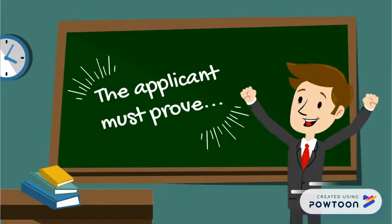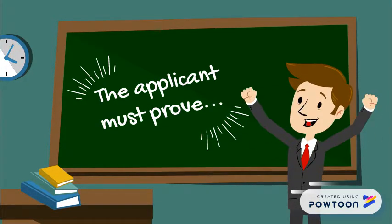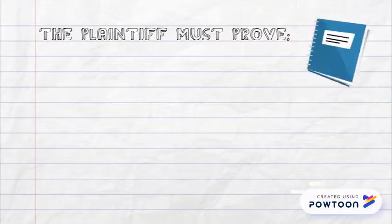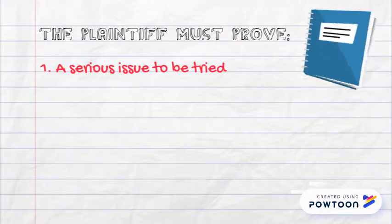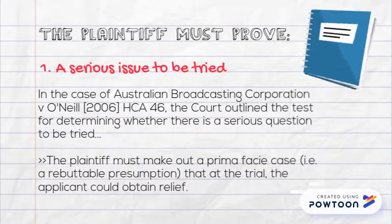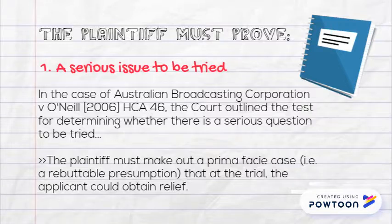In order to obtain an interlocutory injunction, the applicant will generally need to establish the following. Firstly, the plaintiff will need to demonstrate that there is a serious issue to be tried. In Australian Broadcasting Corp against O'Neill, the court outlined the test for determining whether there is a serious question to be tried. The plaintiff must essentially make out a prima facie case, or a rebuttable presumption, that at the trial the applicant would obtain relief.